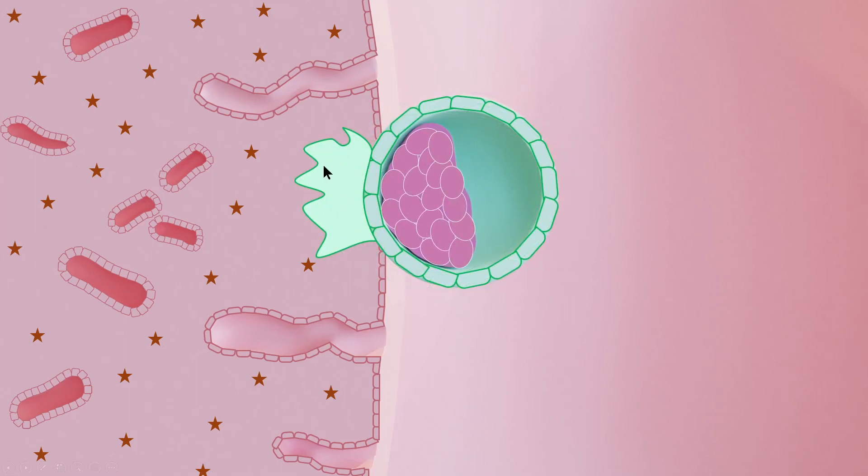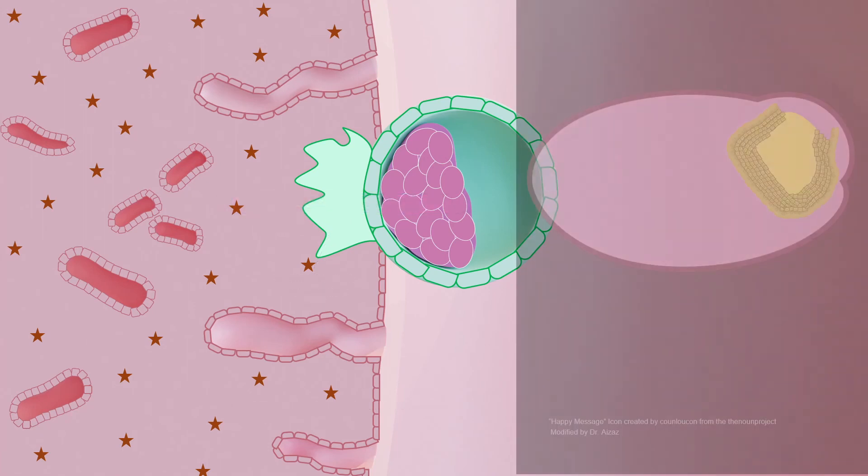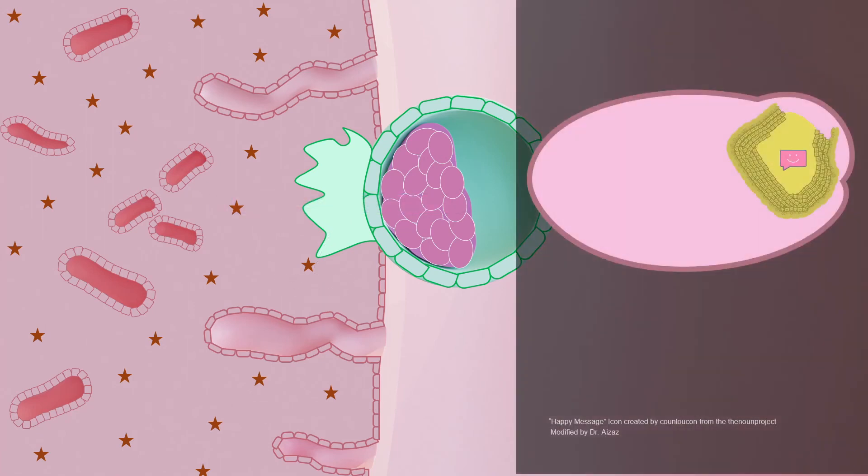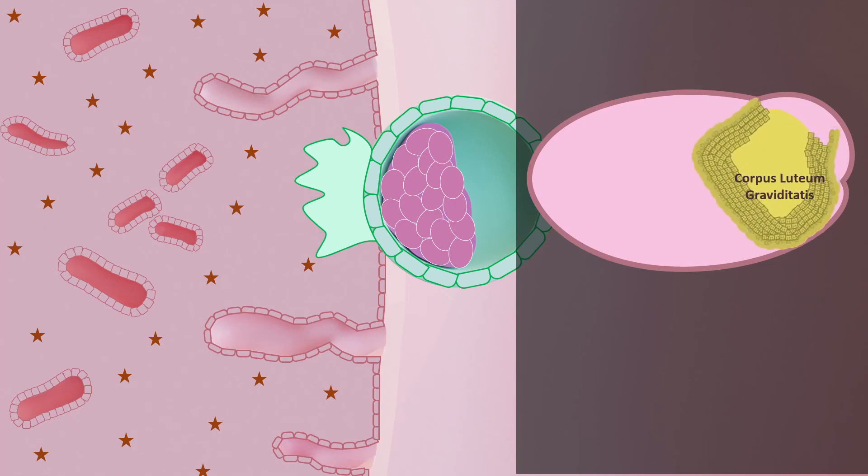And this outer cellular layer is called cytotrophoblast. And now the syncytiotrophoblast invaginates and results in early implantation. Now this endometrium will send a message in the form of HCG to the corpus luteum. So the corpus luteum proliferates and becomes corpus luteum graviditatis. And it secretes a lot of progesterone in order to prevent the shedding of the endometrium.